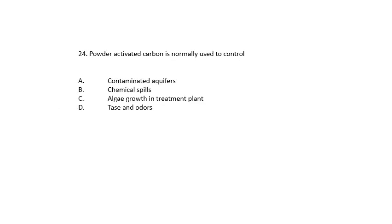Question 24. Powder activated carbon is normally used to control contaminated aquifers, chemical spills, algae growth in the treatment plant, or taste and odors. It's going to be taste and odors. That is what powder activated carbon is used to control.